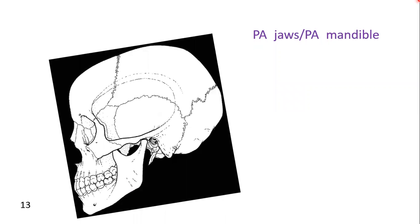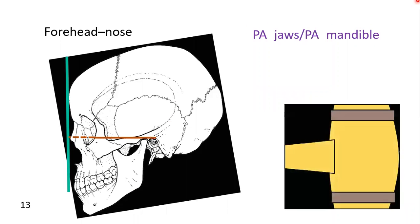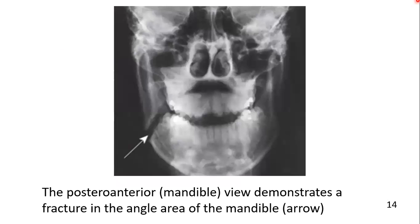Here you can see an animation showing the forehead-nose position of the patient. This is the basic radiographic baseline, and the central ray passes through the rami hitting the film at 90 degrees. Here you can see the resultant image showing the fracture in the angle area of the mandible.